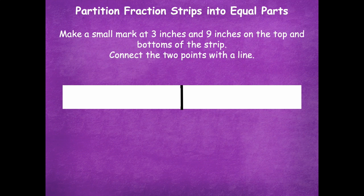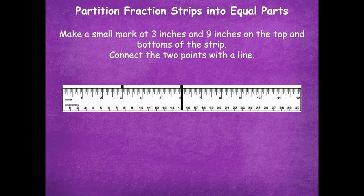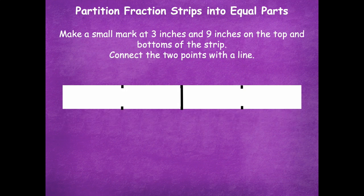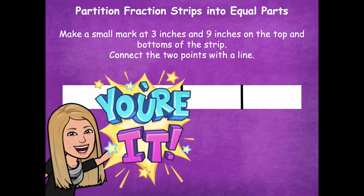Now we're going to split this into fourths. Take the same strip of paper and mark small marks at three inches and nine inches on the top and the bottom, then connect the two points with a line. I'll model for you again, and then you'll pause and do the same thing. Here we have our ruler — I'm going to make a dot at three inches and at nine inches, slide my ruler down to make marks on the bottom of the paper as well, then take the ruler away and connect the dots. Go ahead and pause the video, mark at three inches and nine inches, draw top and bottom, connect the lines, and click play when you're ready for the next step.